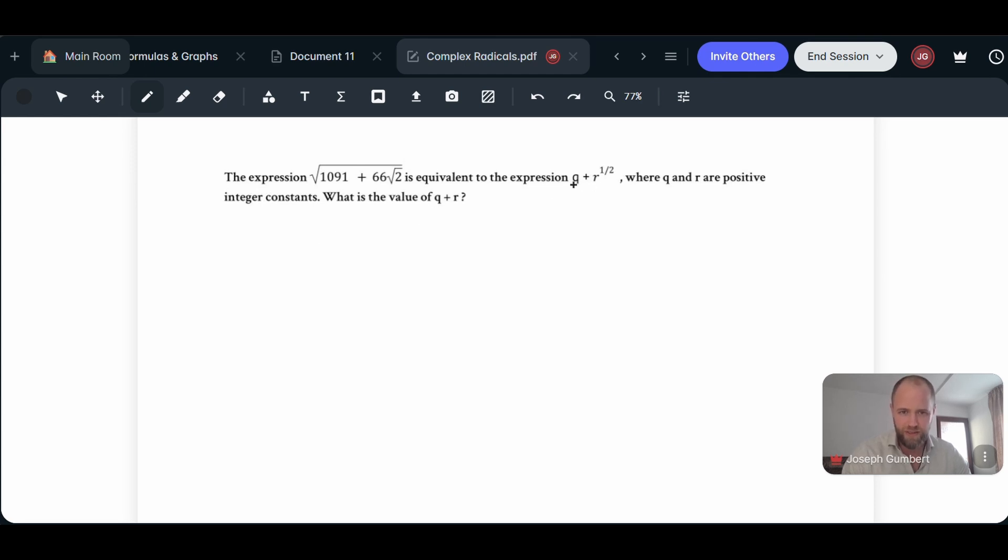So immediately I'm going to recognize that this q plus r to the one-half is very similar already to the 1091 plus 66 root 2. So the way that we could think about this is if we said q plus r to the one-half, that's the same as q plus root r, right? And this is going to be equal then to the square root of 1091 plus 66 times root 2.